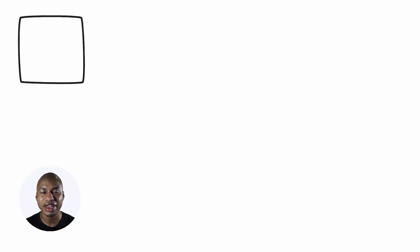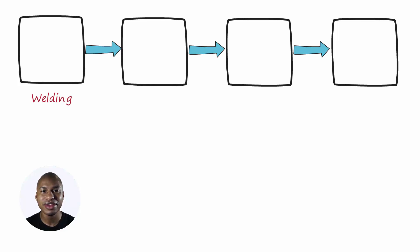Let's imagine we have a production line with four operations: welding, benching, painting, and assembly.